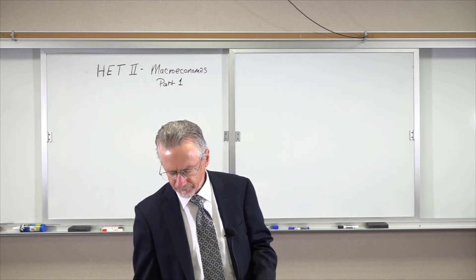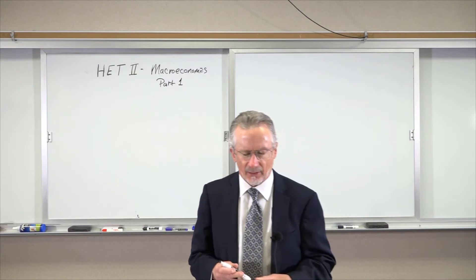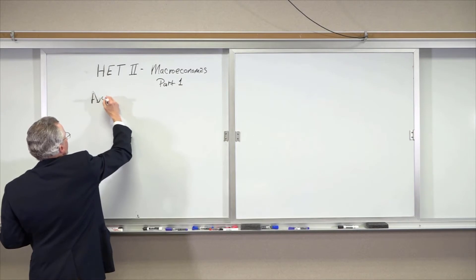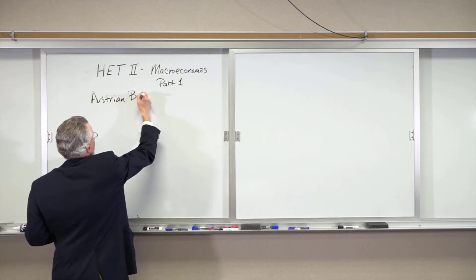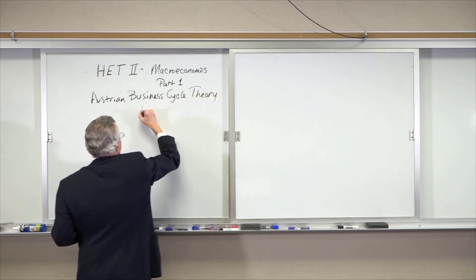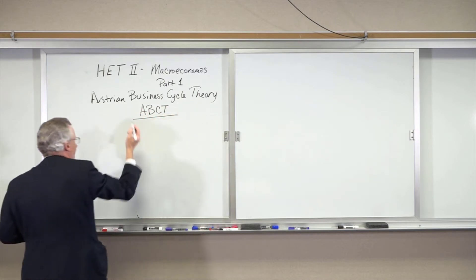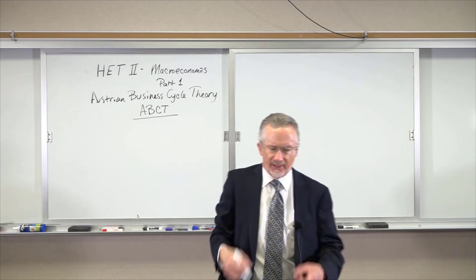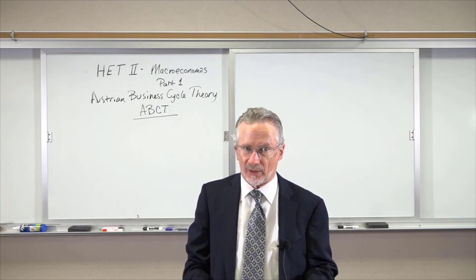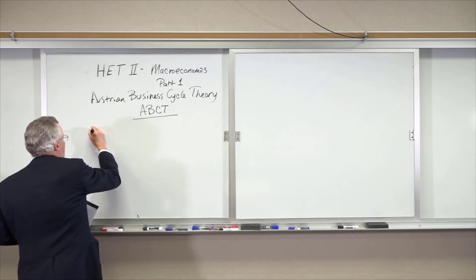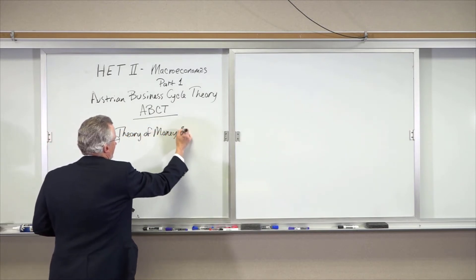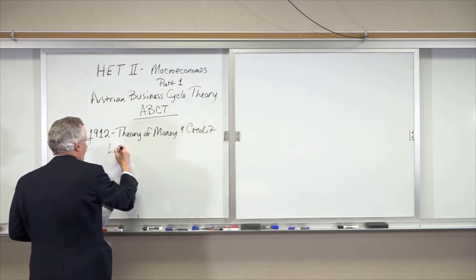What is the story of modern macro? I'm going to start with the Austrians — specifically Ludwig von Mises — and the Austrian Business Cycle Theory, which I will abbreviate ABCT. It was first formally developed by Ludwig von Mises, an Austrian economist and student of Eugen Böhm-Bawerk, follower of Menger. His first important work was in 1912: he published The Theory of Money and Credit, published in German.